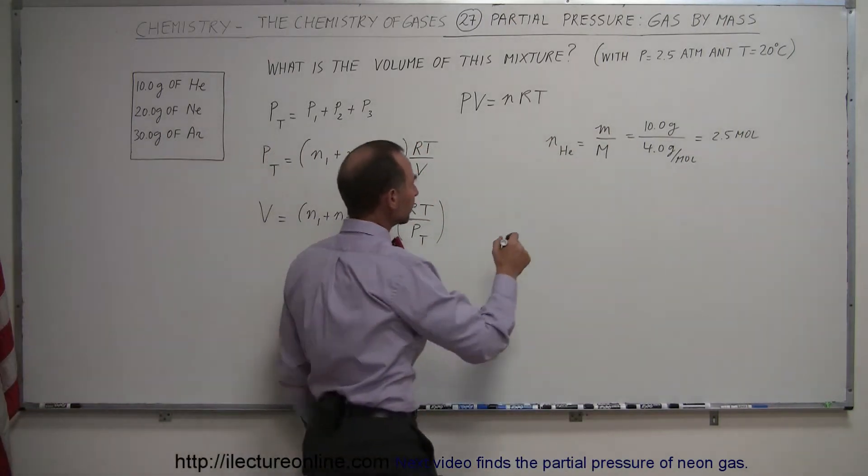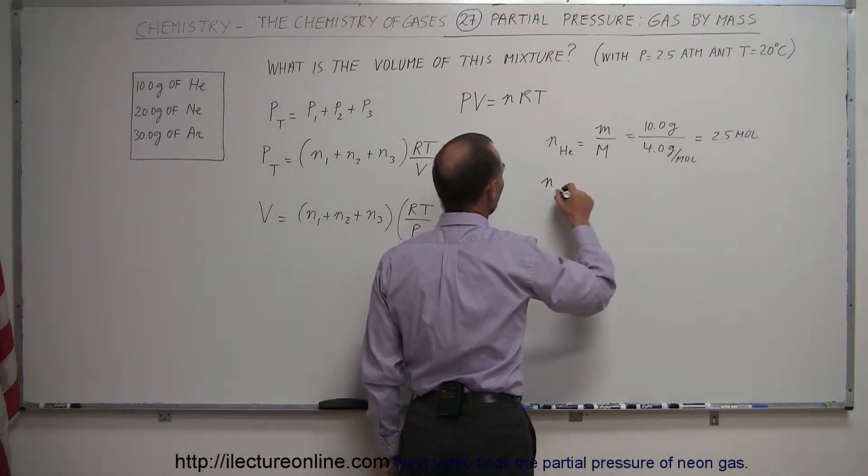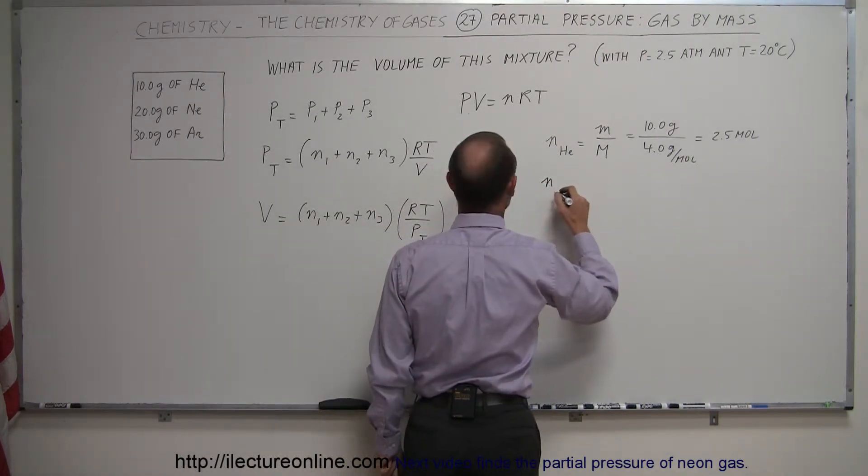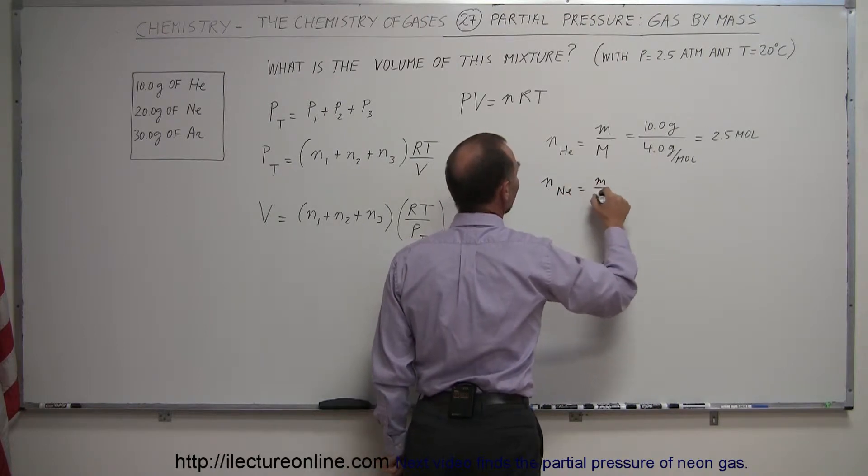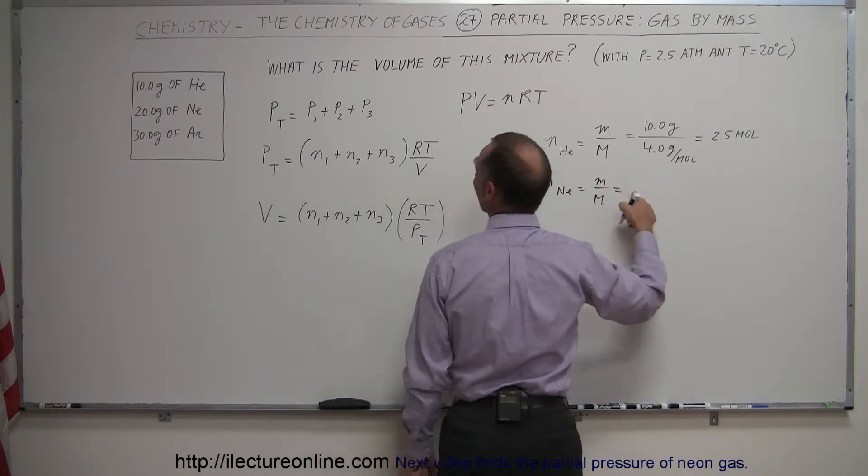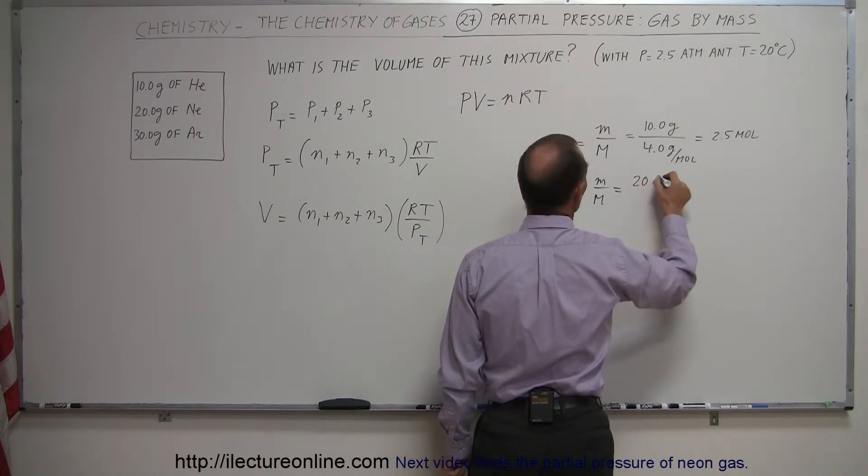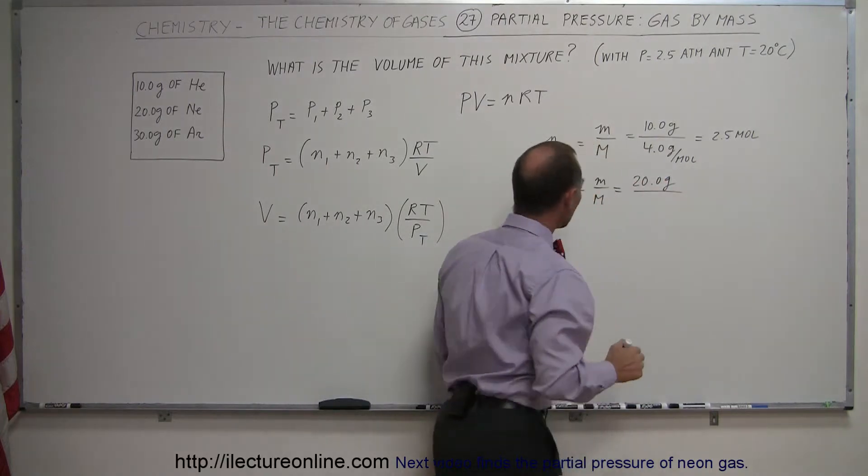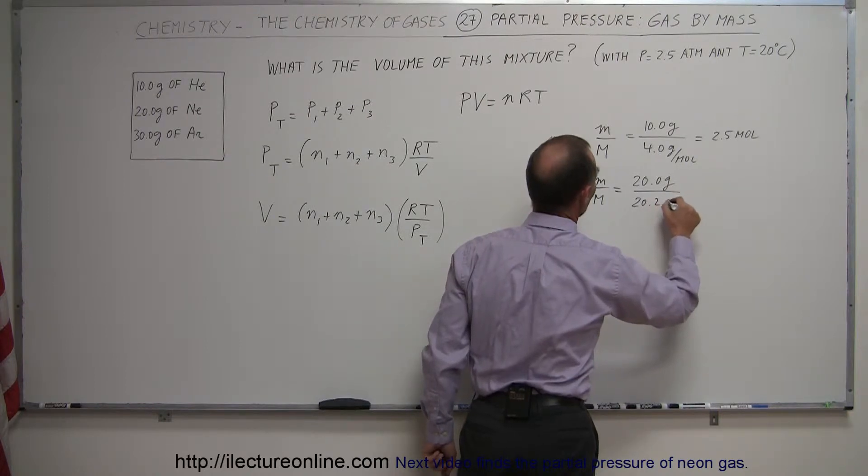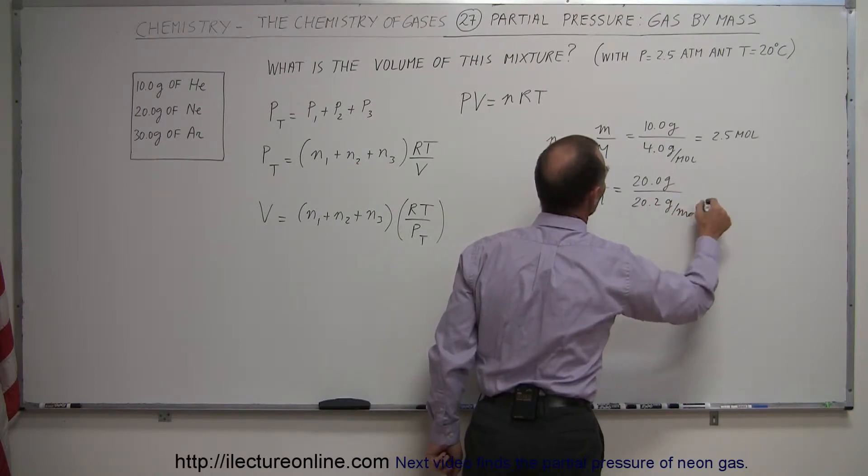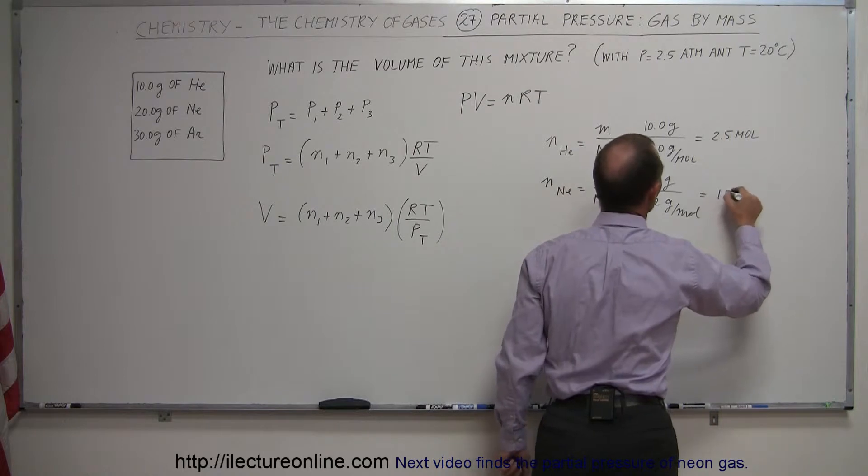Doing that for neon, the number of moles of neon equals the mass divided by the molar mass. That's 20 grams divided by the molar mass of neon, 20.2 grams per mole. That's roughly 1.0 moles.